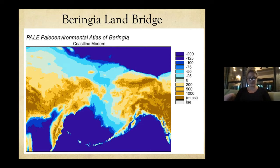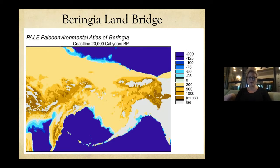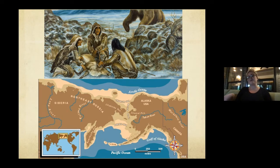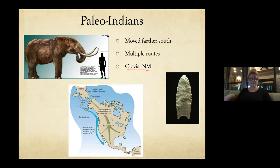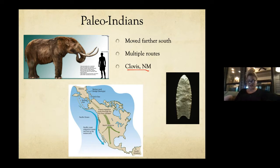The humans crossing and living here used fire and also hunted and gathered. Many believe most calories actually came from gathering, not hunting, so it really should be called 'gather-hunting.' Men found corridors and began moving farther south, with multiple routes — some possibly by boat, some walking all the way down to locations like Clovis, New Mexico. In Clovis, New Mexico, they found a fluted stone spear tip believed to be about 13,000 years old, with similar ones found in North and South America.